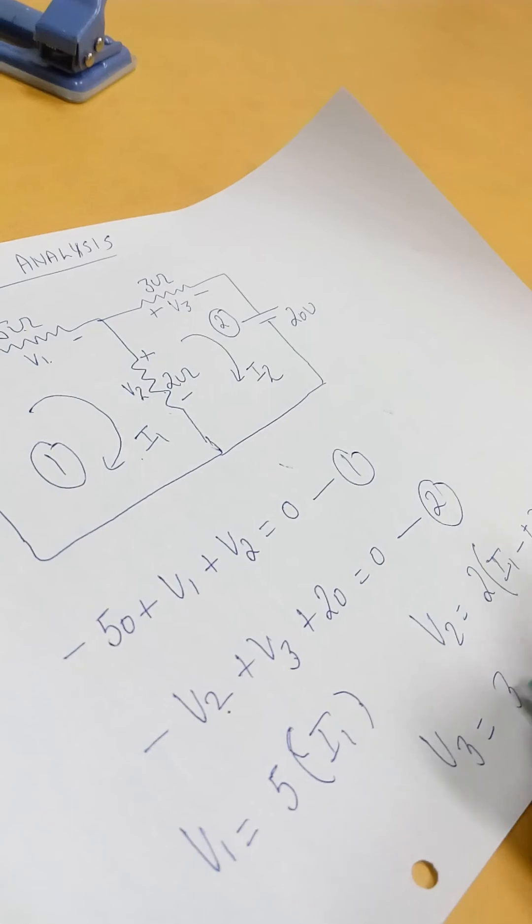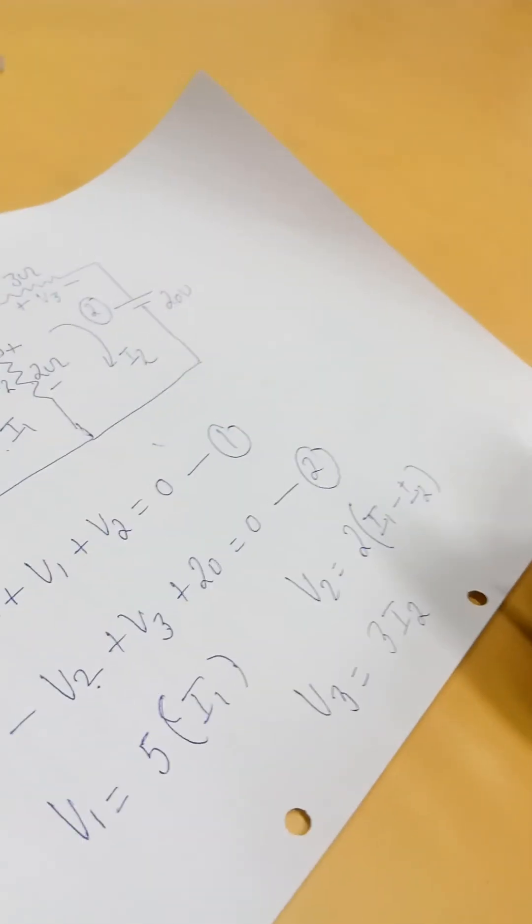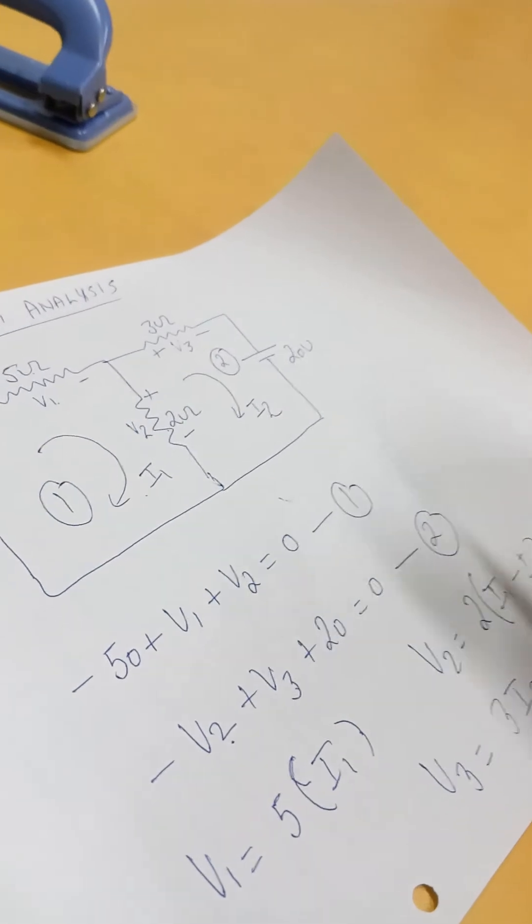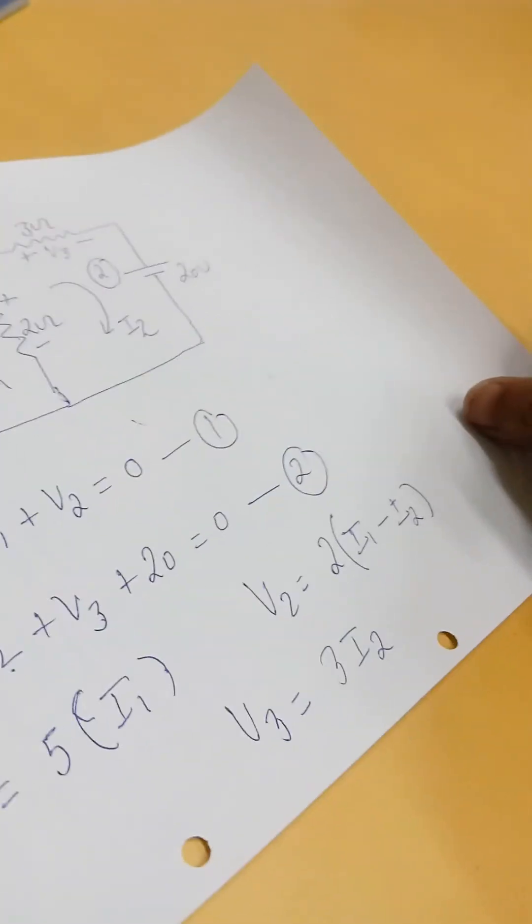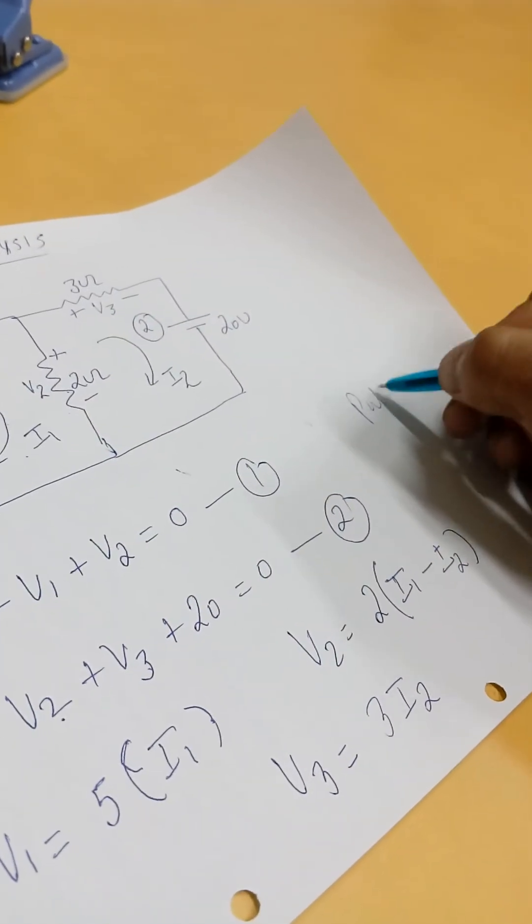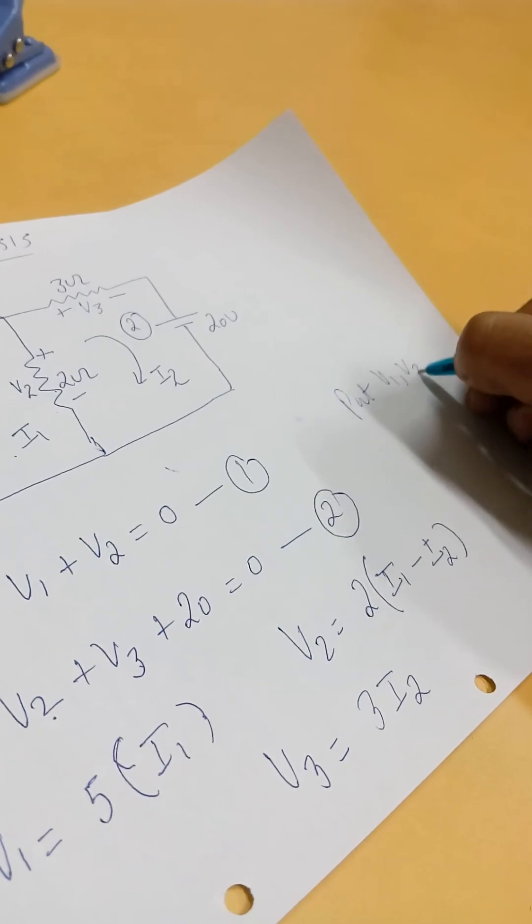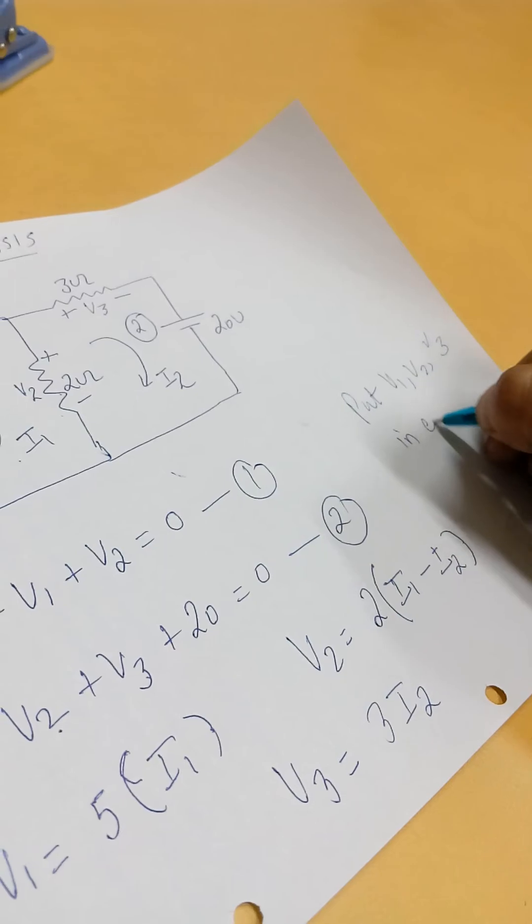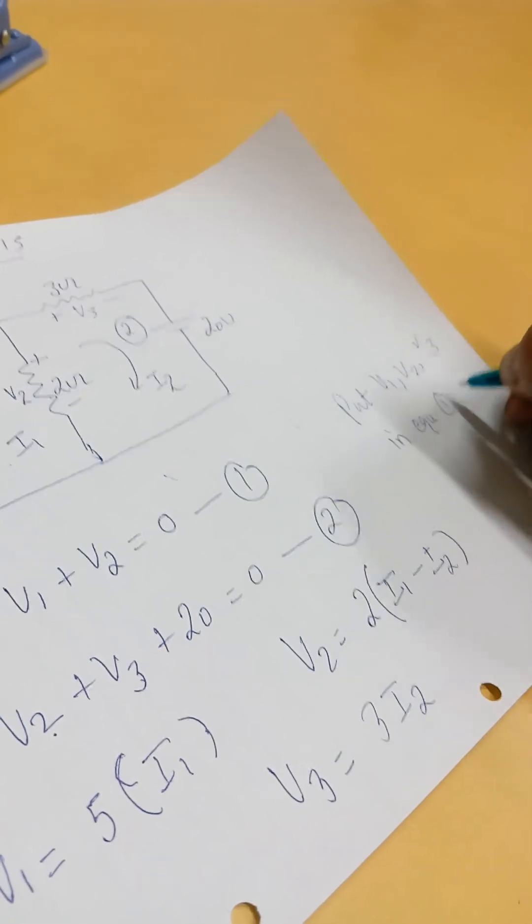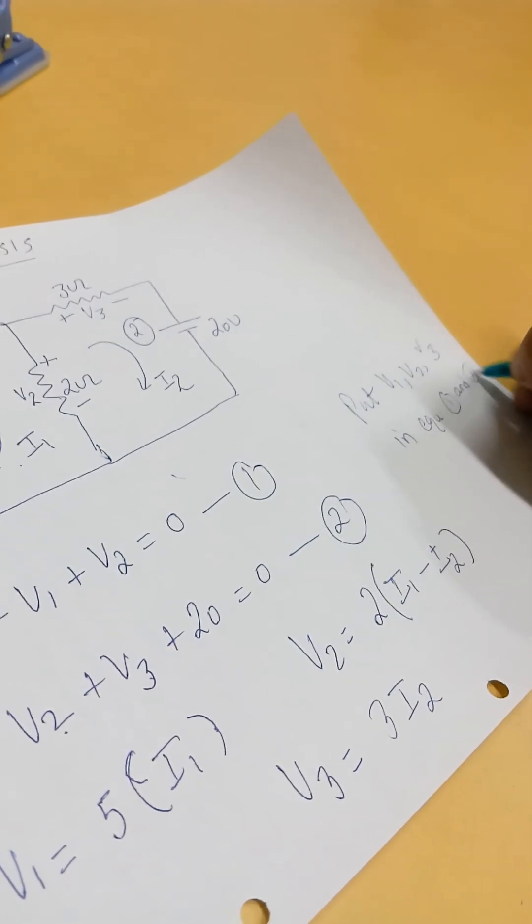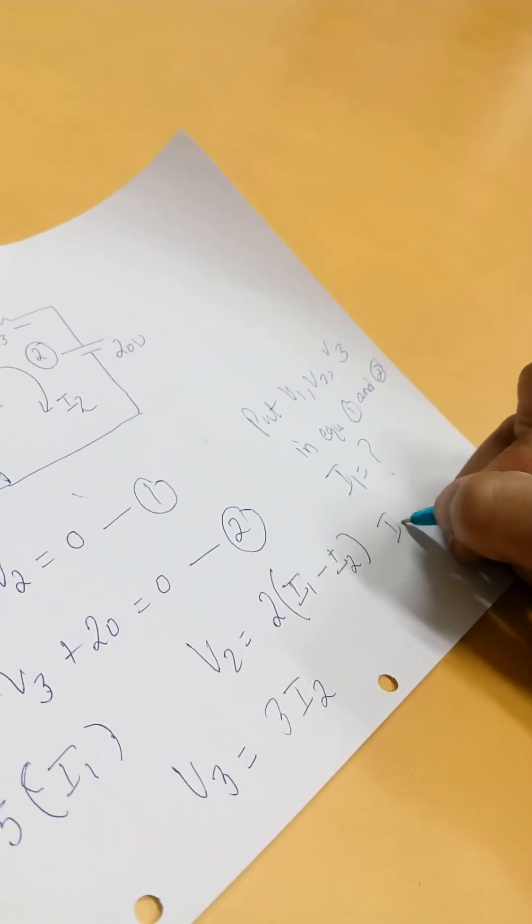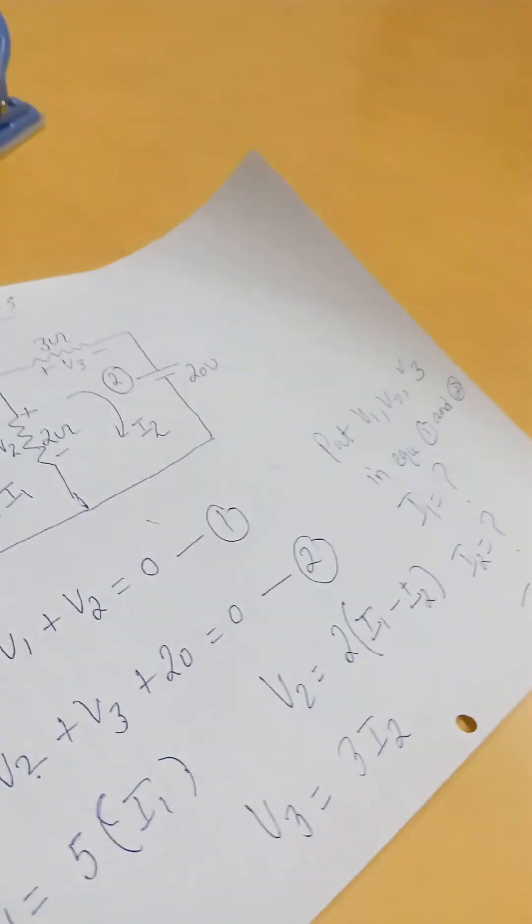Now put V1, V2, and V3 in equation 1 and 2. From here we can find the value of I1 and I2. Thank you very much.